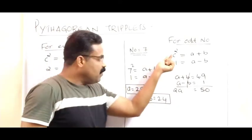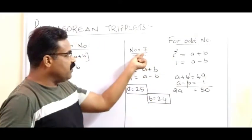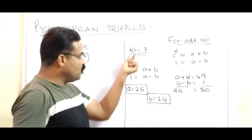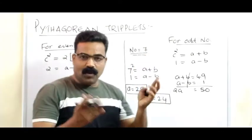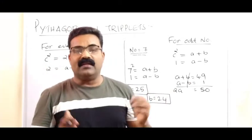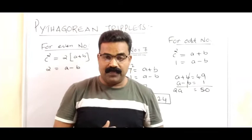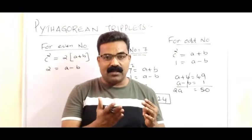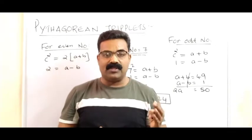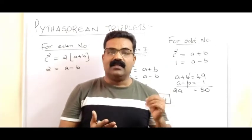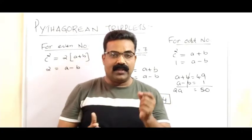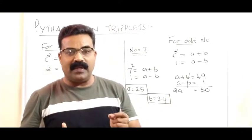So if the given number is 7, the other two numbers are 25 and 24. The group of three numbers — 25, 24, and 7 — forms a Pythagorean triplet. You can put them as the sides of a right-angled triangle: hypotenuse 25, one side 24, and the other side 7. They satisfy Pythagoras theorem.